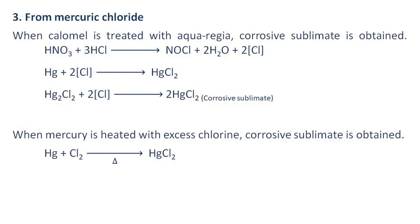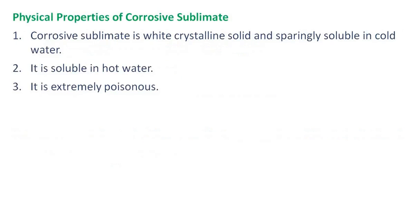From mercuric chloride: When calomel is treated with aqua regia, corrosive sublimate is obtained. Also, when mercury is heated with excess chlorine, corrosive sublimate is obtained.